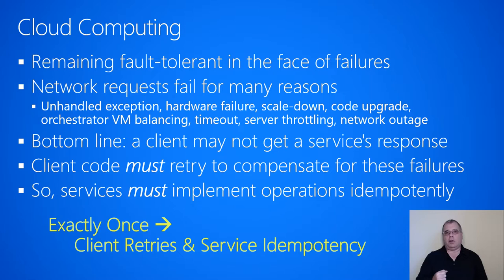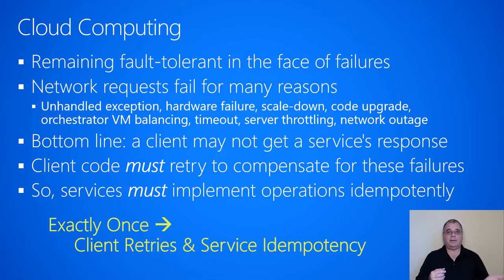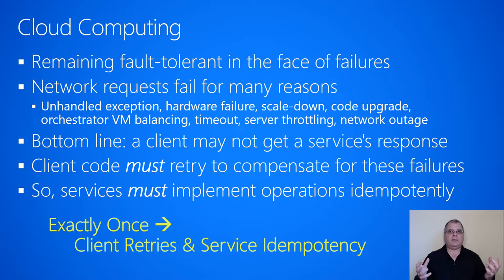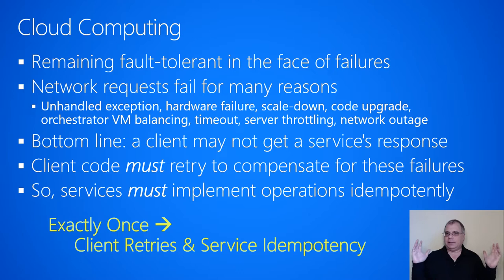A code upgrade is another failure scenario. If you have 10 computers running version 1 of your service and want to upgrade to version 2, the version 1 code comes down and version 2 comes up. When version 1 comes down, it could be processing client requests, and those clients won't get a response back. The orchestrator might also do virtual machine balancing, deciding to move your service from one node to another — completely out of your control.